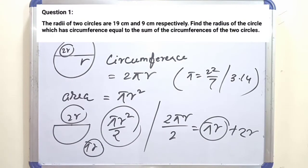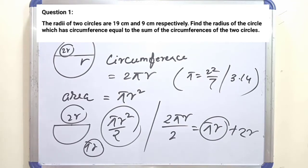Question number 1: The radii of two circles are 19 centimeters and 9 centimeters respectively. Find the radius of the circle which has circumference equal to the sum of the circumferences of the two circles.